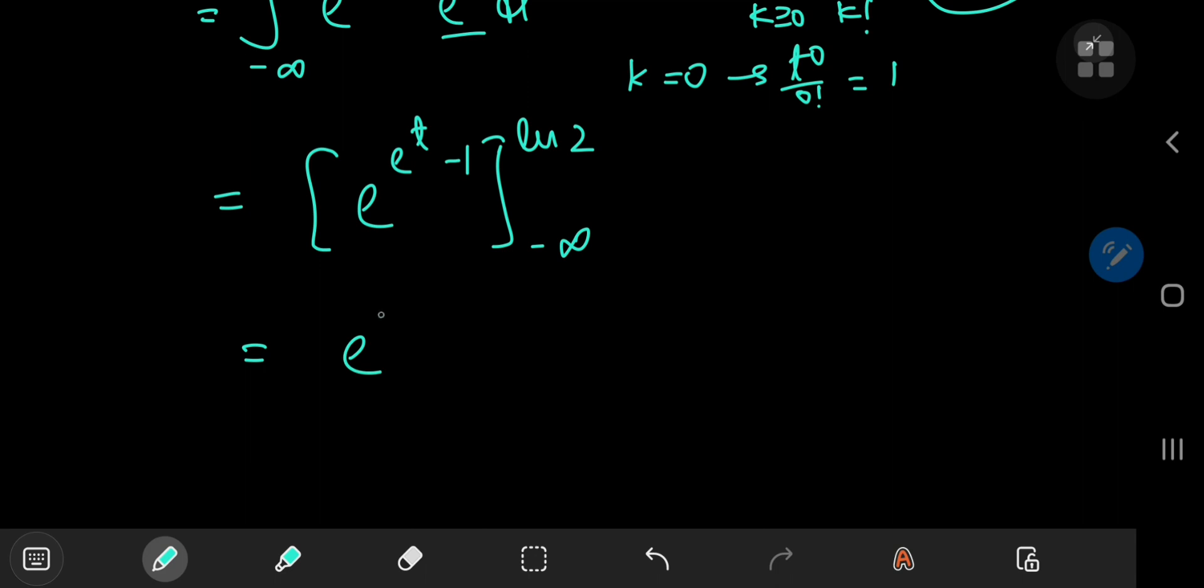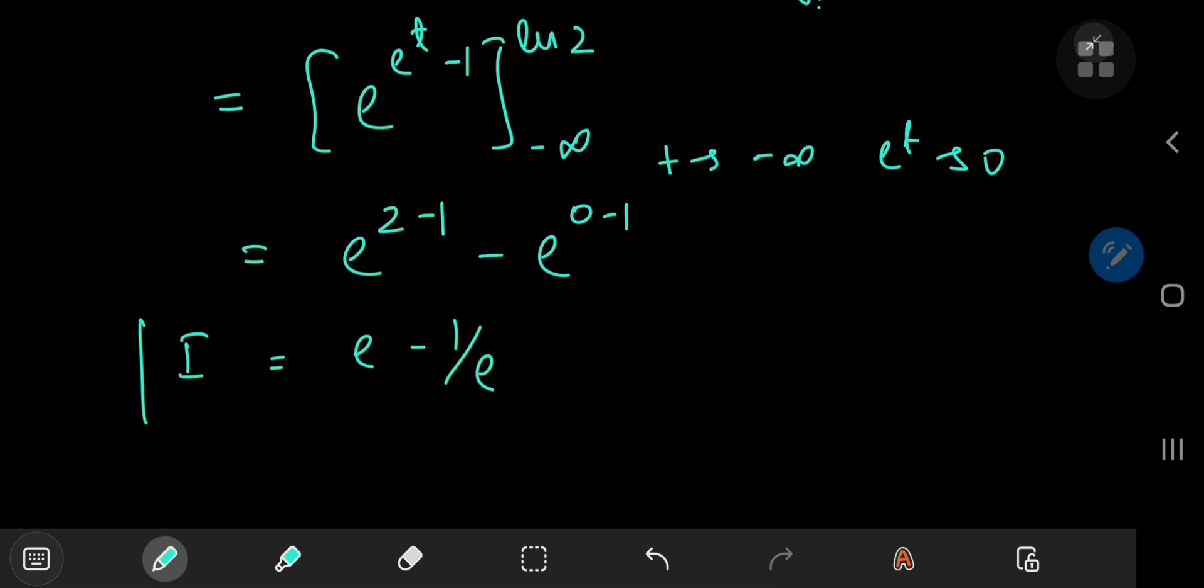Now, using these limits, we have e to the e to the natural log of 2, which is 2 minus 1 minus in the limit as t approaches negative infinity. e to the t approaches 0. So we have e to the 0 minus 1, which sorts out to e minus 1 by e, which agrees with black pen, red pen's answer.